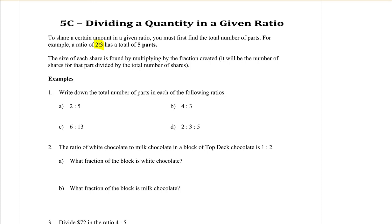The size of each share is found by multiplying by the fraction that is created. It will be the number of shares for that part divided by the total. It sounds wordy when you say it like that, but it's way easy when you see it in action.